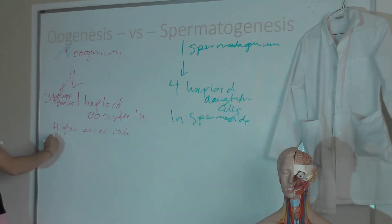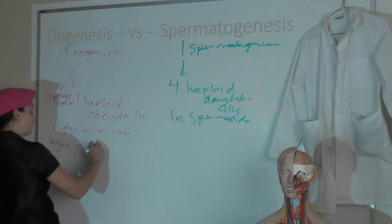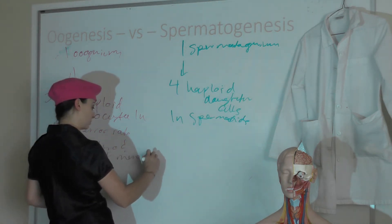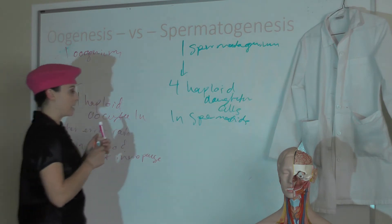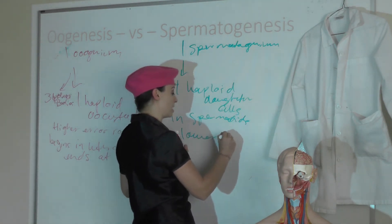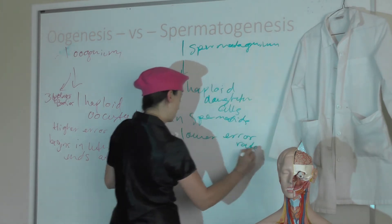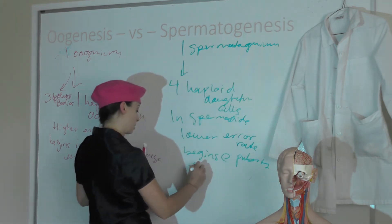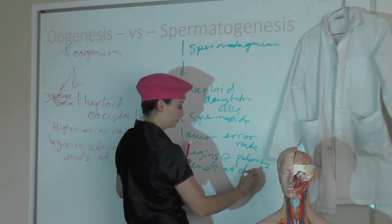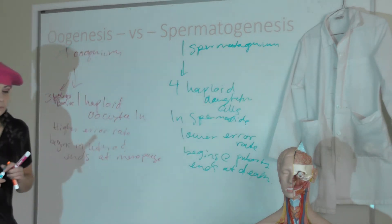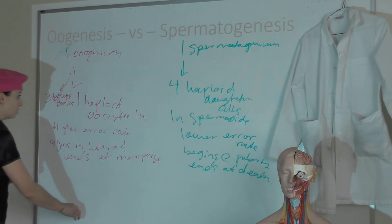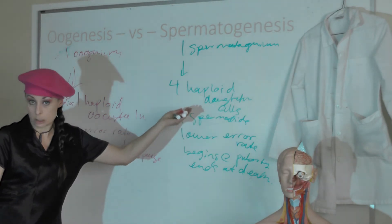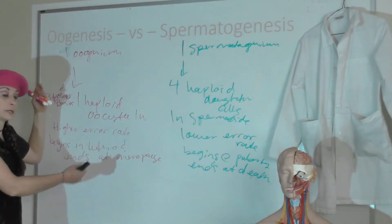Oogenesis has a higher error rate. Oogenesis begins in utero and ends at menopause. Spermatogenesis has a lower error rate and begins at puberty and ends at death. Oogenesis occurs in the ovaries; spermatogenesis occurs in the testes. Oogenesis occurs in females; spermatogenesis occurs in males.